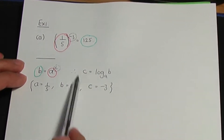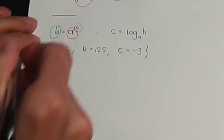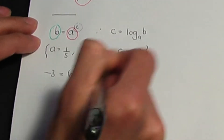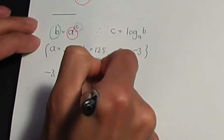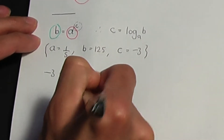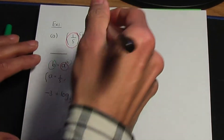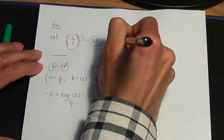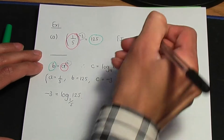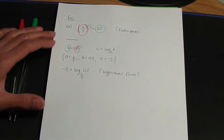I compared these two equations which are in index form in order to work out what a, b and c are. Now it's just a matter of substituting a, b and c into the relation which is in logarithmic form. If I substitute: c is minus three, so minus three is equal to log of b — b is 125 — to the base of a, a is one over five. This equation was in index form and I wrote it in logarithmic form.